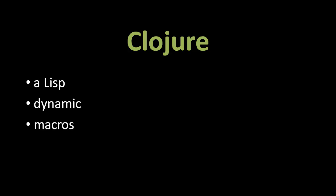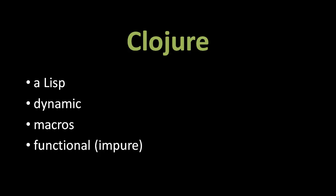Like all dialects of Lisp, Clojure is a dynamic language, and it also has this key feature called macros, which we will explain. Clojure is also a functional language — and if you don't know what that means, don't worry, I'll explain it in the next slide. But Clojure is also an impure functional language; it's not pure. Haskell is a pure functional language. Clojure is not.